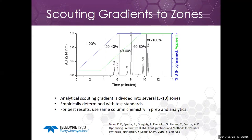The advantage of the zone technique is that once you get it set up it's very easy to use — you just look at the retention time off of a chart, choose your run, and get a compound purified. Some disadvantages are that the gradient is not optimized for any particular compound. For instance, this zone over here has two compounds in it: the first peak will elute in the middle of the focused gradient and the second peak will elute fairly late. Another disadvantage is it takes time to determine the zones, and you'll need to set up five or six methods for each column on the prep system.